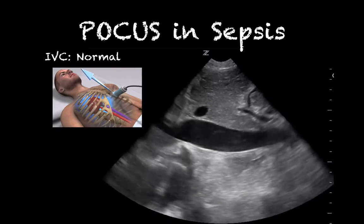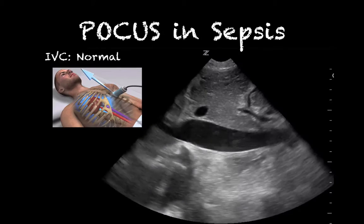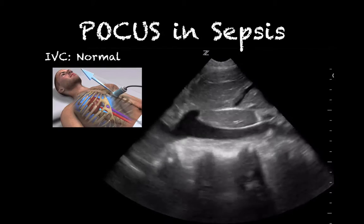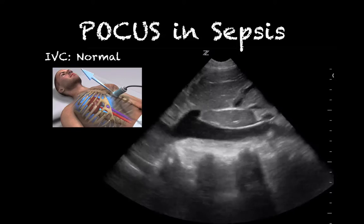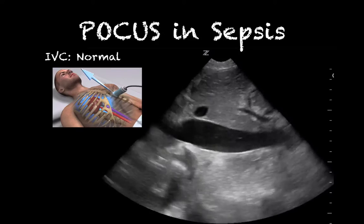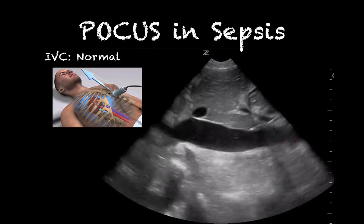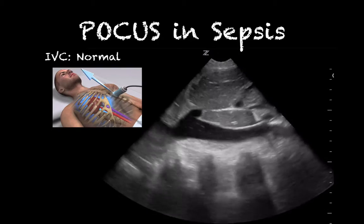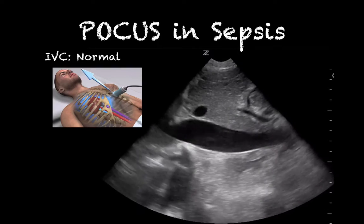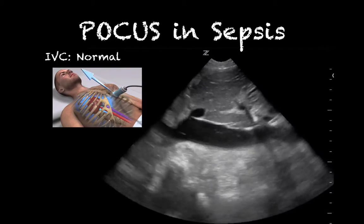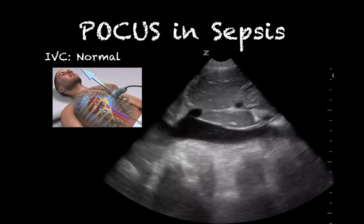The IVC is another good place to look for signs of sepsis or septic shock. We image the IVC in long axis, with the transducer indicator pointed toward the patient's head. You should see the hepatic vein draining into the IVC and the IVC dumping into the right atrium. This is a normal IVC — the width varies somewhat with respiration, but the vessel generally collapses less than 50 percent.